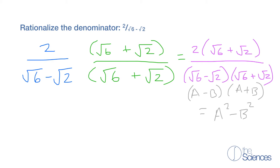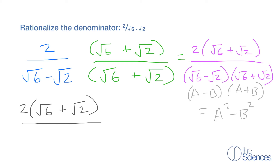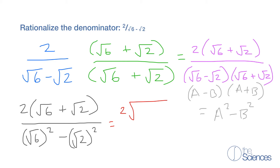When we do that, we get 2 times the square root of 6 plus the square root of 2, over — if a was the square root of 6, then we get the square root of 6 squared minus b, which is the square root of 2 squared. So what we get is 2 times the square root of 6 plus the square root of 2, over the square root of 6 squared, which is 6, minus the square root of 2 squared, which is 2.